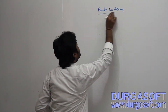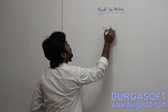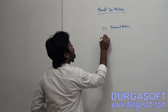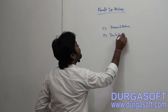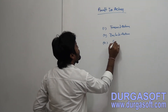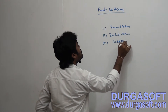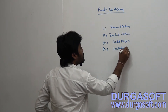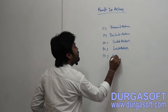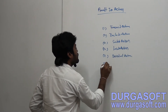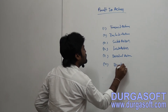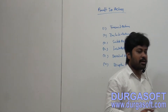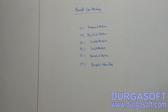The built-in action classes include ForwardAction, IncludeAction, SwitchAction, LocaleAction, DownloadAction, and exception handlers. These are the main built-in action classes available in Struts.